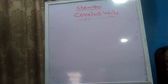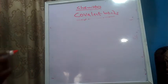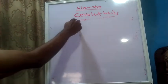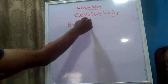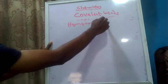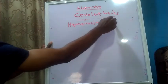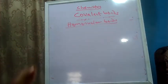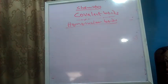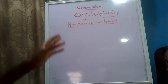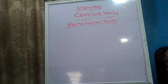Welcome back. In this video we will be discussing covalent bonds, and a particular aspect of it which is homonuclear covalent bonding. Recall from our last video that we said we have two major types of covalent bonds. Covalent bonds being an interatomic bond, meaning bonds formed between two atoms, could exist as homonuclear or heteronuclear.